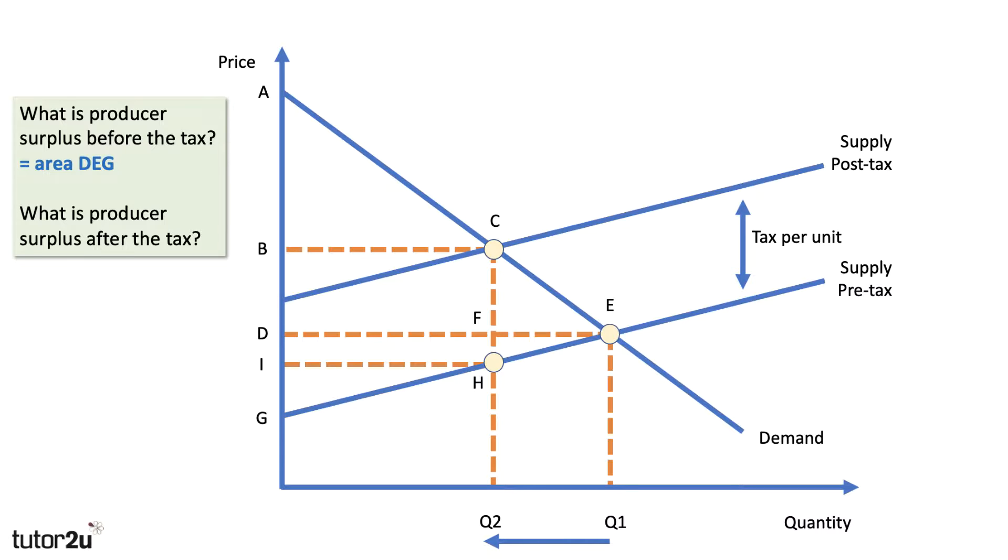So producer surplus is area I, H, G. Smaller quantity Q2, they get the price I. There's a smaller area of producer surplus.